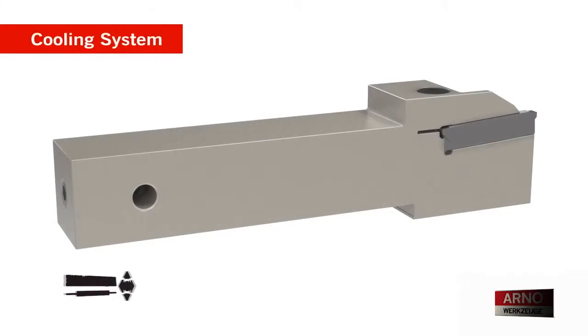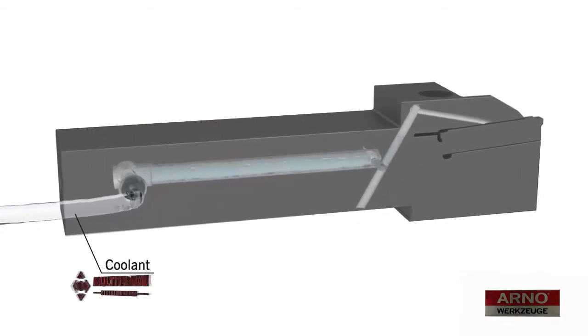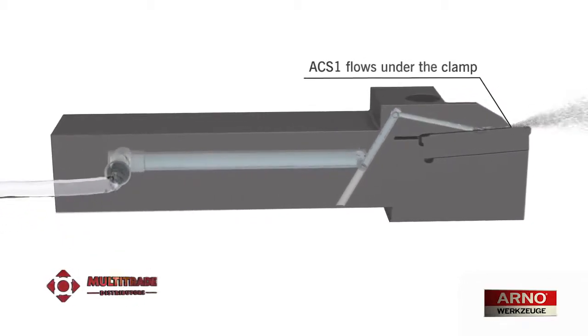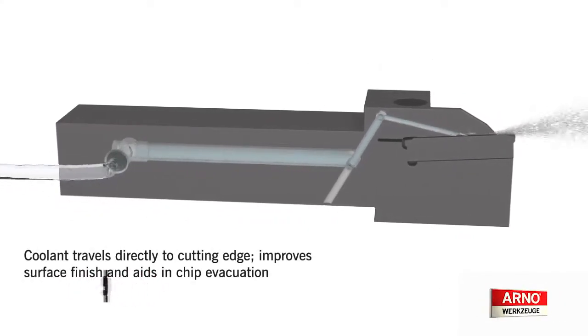The Arno SA family of monoblock-style tools features ACS-1 through coolant delivery. This system routes coolant under the insert clamp and directly under the chip, right to the cutting edge. This provides superior tool life and operation stability.